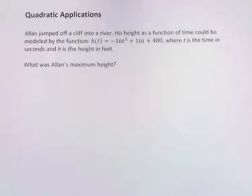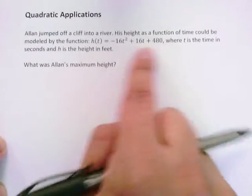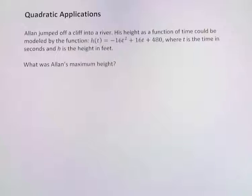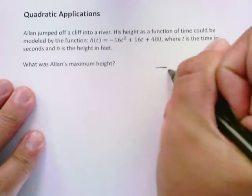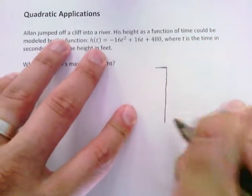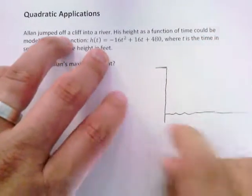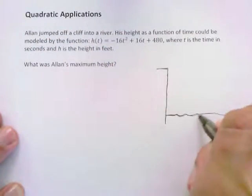Now I don't know about you, but it's hard to visualize what in the world is going on with an equation like this. But what we do know is Allan jumped off a cliff into a river. So I like to draw pictures to kind of have a good idea of what's going on.